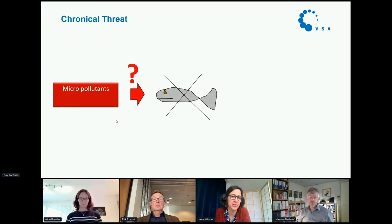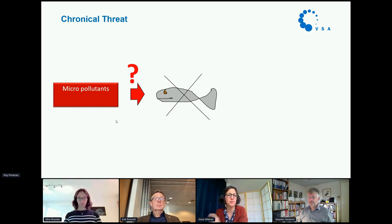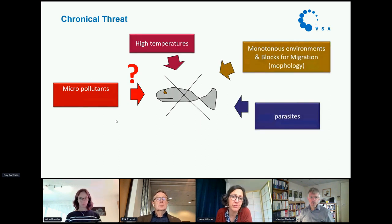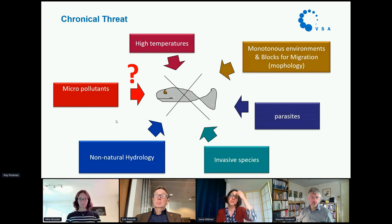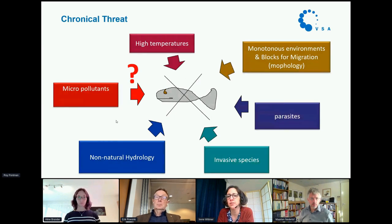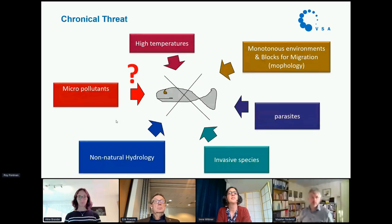Do micropollutants really pose a threat to our organisms? Fish are particularly relevant in many countries. If we consider wastewater treatment plants, we have to consider chronic threat because chemicals come throughout the year, so animals are exposed over a long time. Next to micropollutants in rivers, we have many other problems: high temperatures, monotonous environment, parasites, non-natural hydrology — dams in Switzerland, for example — and invasive species. So in rivers, it's usually very difficult to prove that a wastewater treatment plant is causing problems; these require really in-depth research studies to prove that.